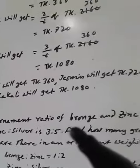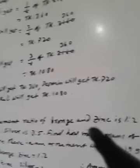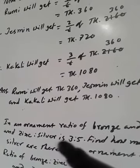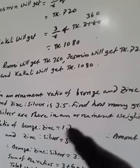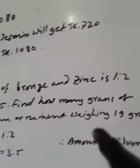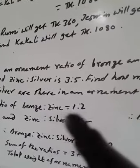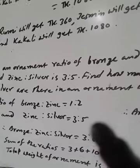In an ornament, ratio of bronze and zinc is 1 to 2, and zinc to silver is 3 to 5. Find how many grams of silver are there in an ornament weighing 19 grams. Given ratio of bronze is to zinc 1 is to 2, and zinc is to silver 3 is to 5.